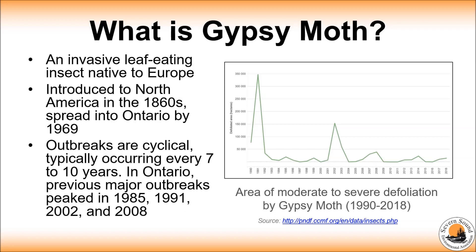In Ontario, gypsy moth is beyond the stage where it can be completely eradicated and as a result it is expected to continue to have periodic population increases. Ontario has previously seen four outbreaks and in the SSEA area we are experiencing an upsurge in populations again in 2019 and 2020.